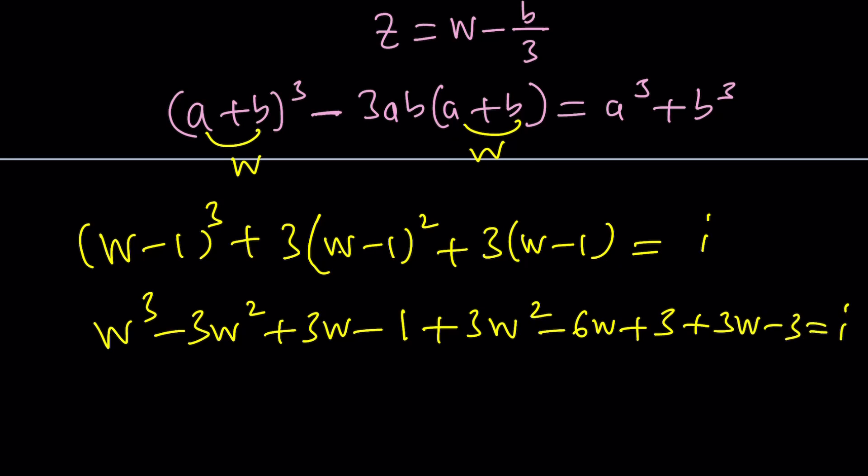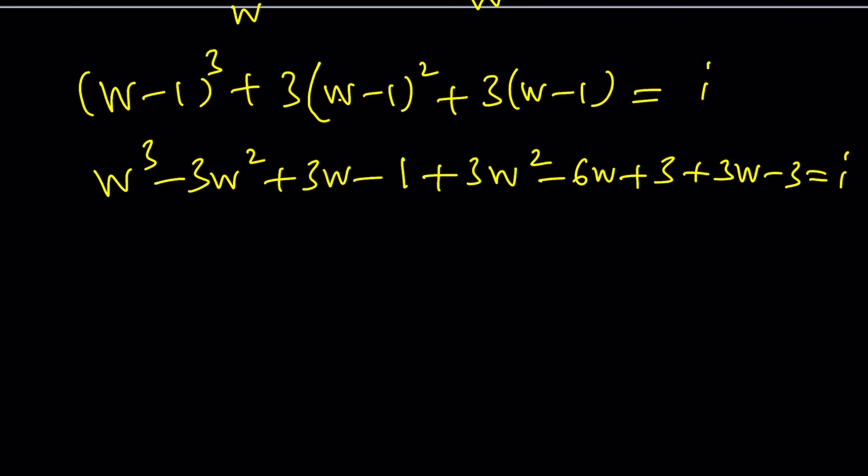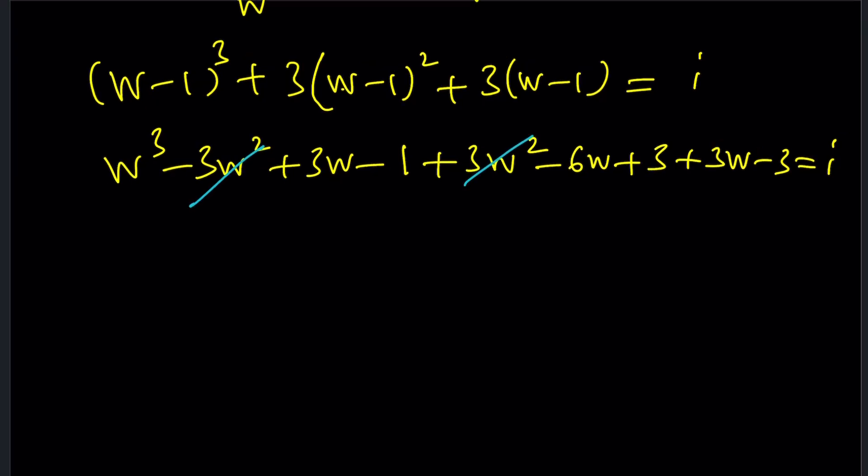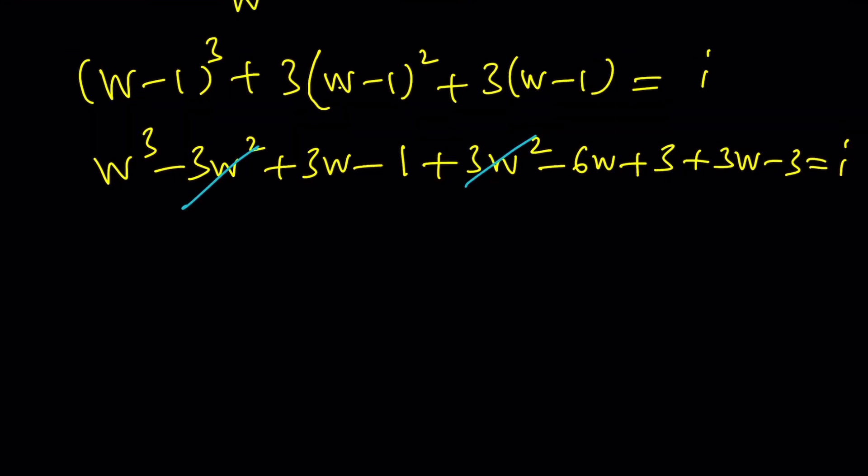Let's see if we can simplify this expression. First of all since our goal was to eliminate the quadratic term it should definitely cancel out. So w squared should cancel out and then 3w plus 3w is 6w that's also going to cancel out. 3 is also going to cancel out. Interesting. And we're going to end up with something like this: w cubed equals 1 plus i.